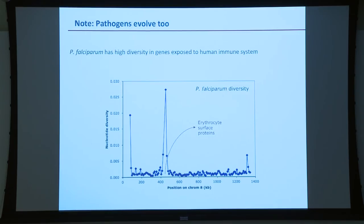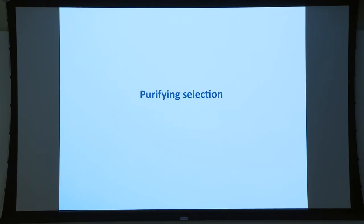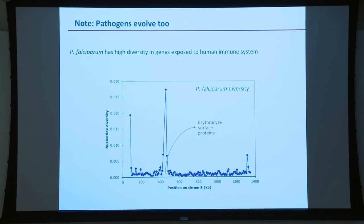This is an example of frequency-dependent selection: whether a variant is good or bad depends on what other people have, not just on your physical environment. It serves to keep various alleles in the population, sometimes for a very long time. As a side note, while we have evolved to respond to pathogens in this way, pathogens evolve as well and do the same thing — faster. Looking at genetic diversity across a chromosome in Plasmodium falciparum, you see giant spikes at genes exposed to the human immune system. Malaria hides inside red blood cells but exports certain proteins to the cell membrane, so there's a lot of pressure to have diversity between parasites. In some cases there are multiple copies of these genes within the parasite, turned on successively.